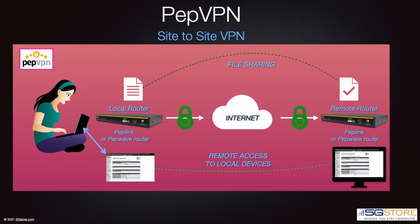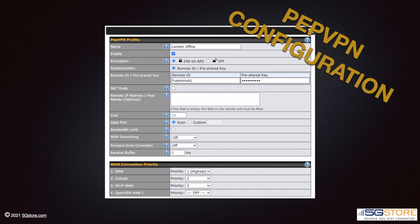When you're using all Peplink and Pepwave hardware, PepVPN is a comparable method that will save you time. PepVPN works in the same manner as IPSec, meaning they both provide a way of connecting two remote networks together. The difference in settings is quite obvious — you still have enough for what's needed, but in most cases this is all we'll have to enter: name, encryption, authentication, and remote IP address or hostname on one router. The rest are default settings.